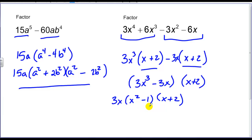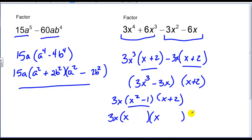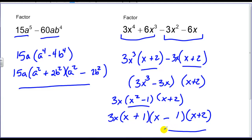And you'll notice here's my difference of squares term. So I have 3x, and what times itself is x squared — that's x. Then what multiplied by itself is 1 — it's just 1. I need a plus or a minus. And so there's my completely factored expression. That was a difficult problem.